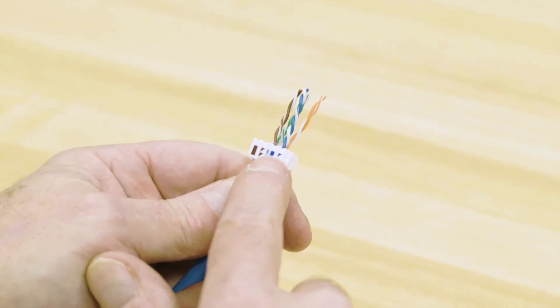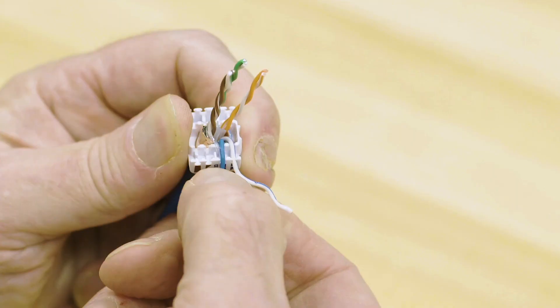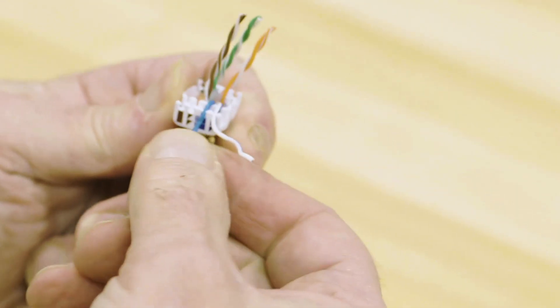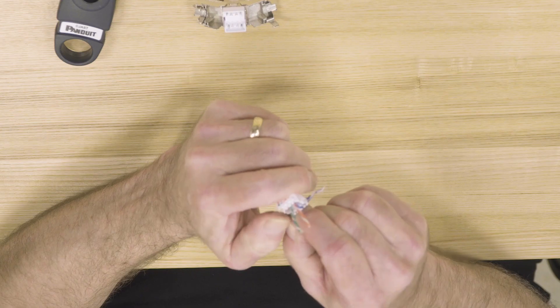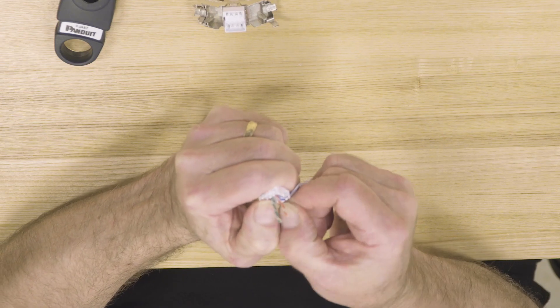Set the blue conductors first, making sure they're set down inside - you'll feel it click. Then set the brown conductors next.